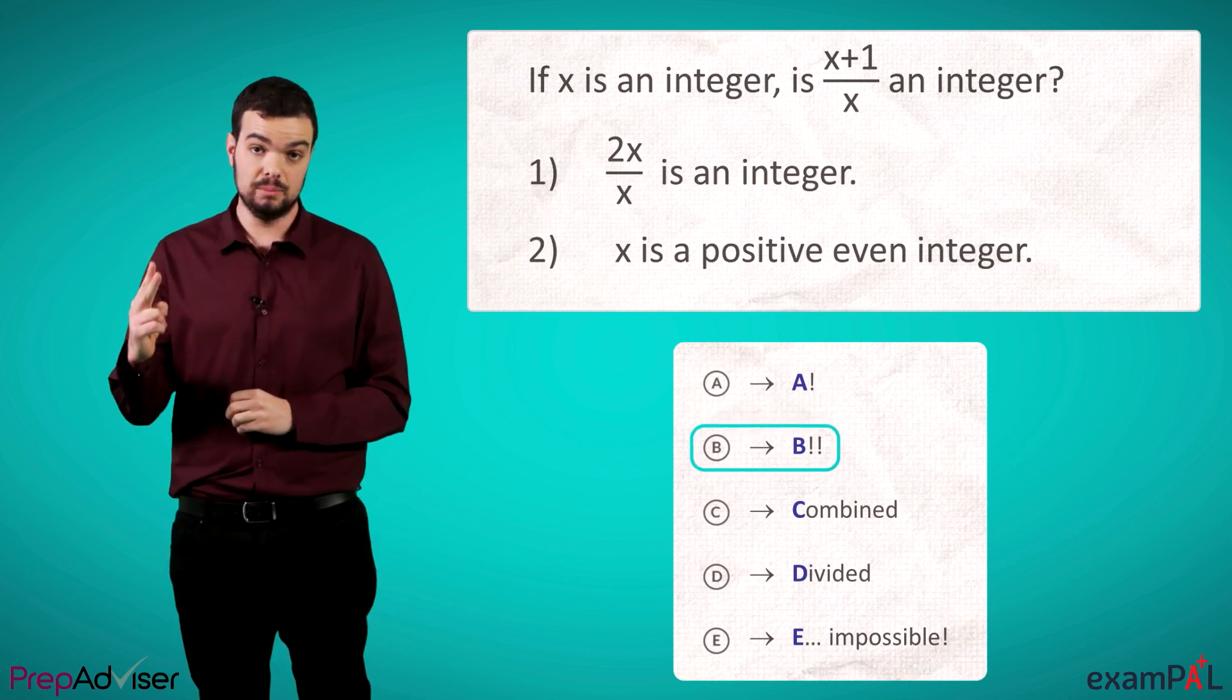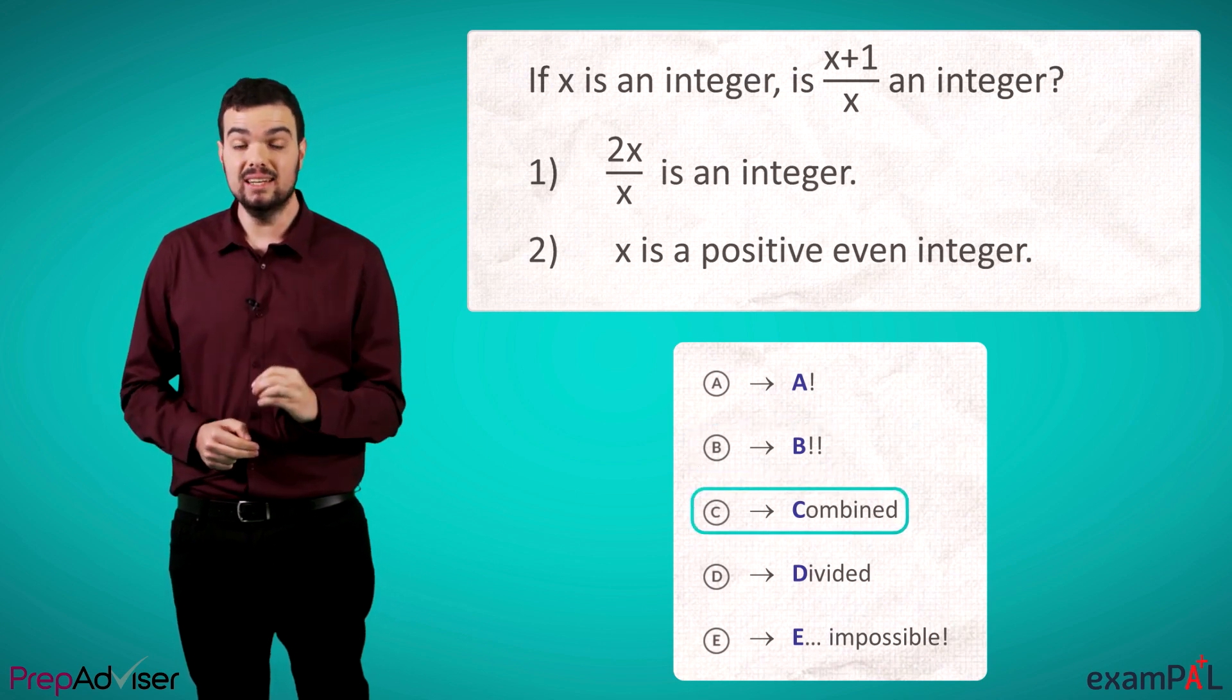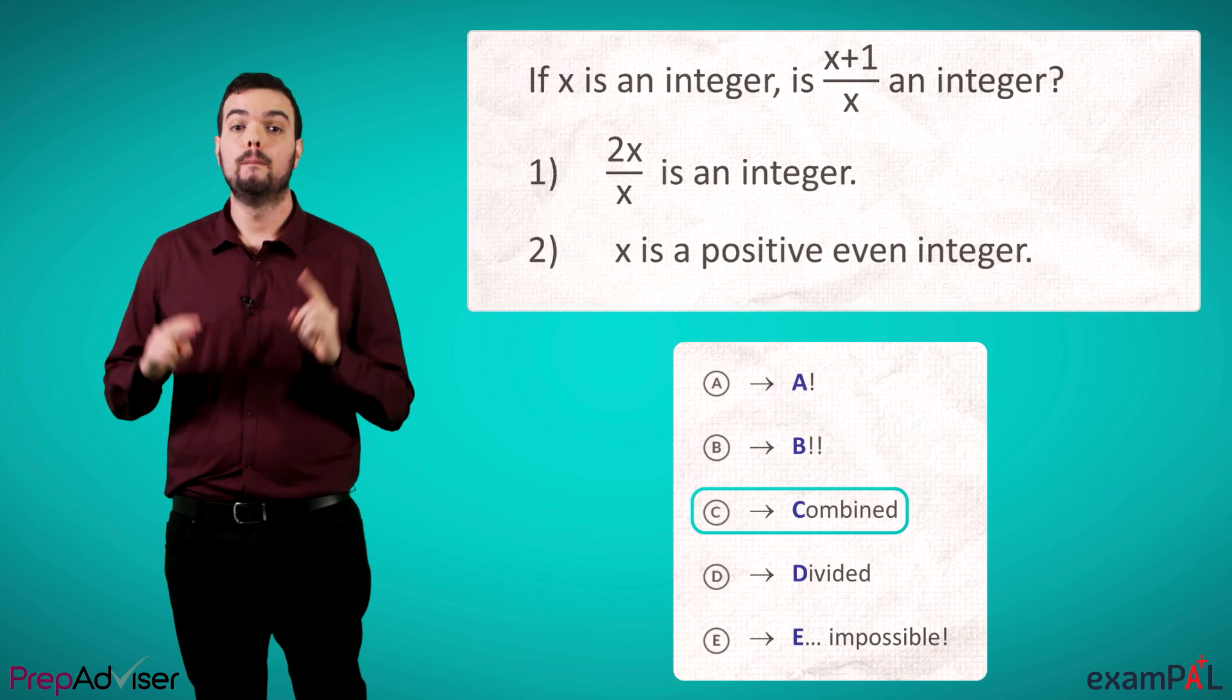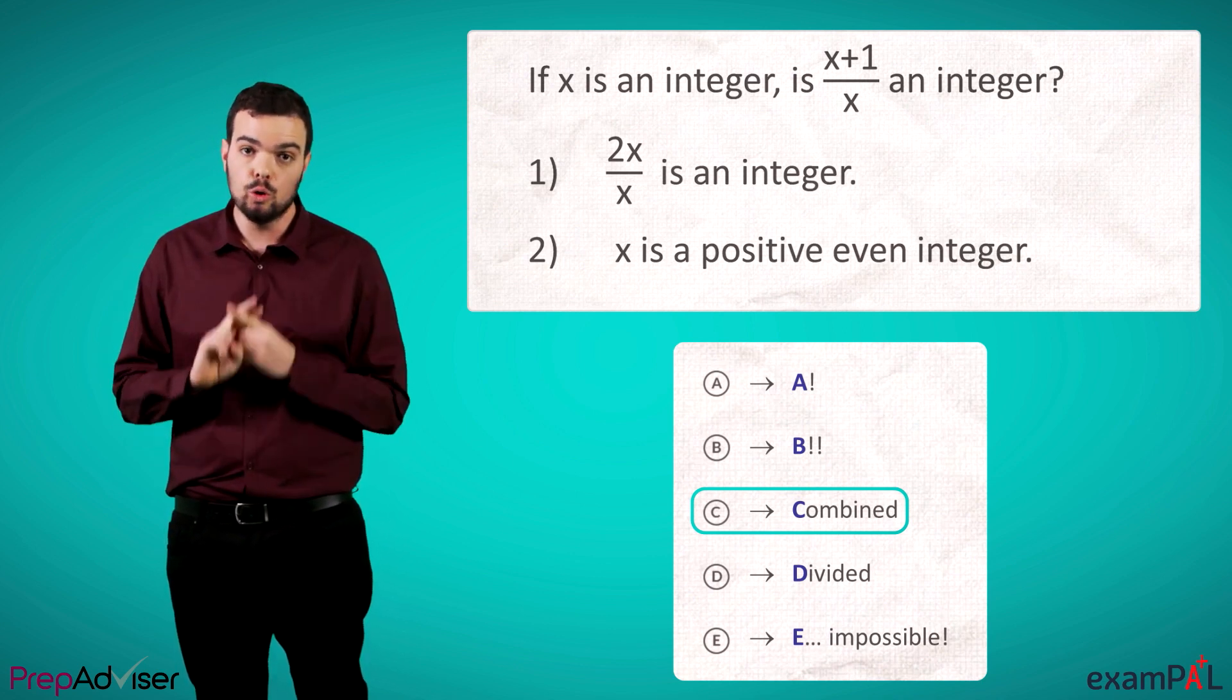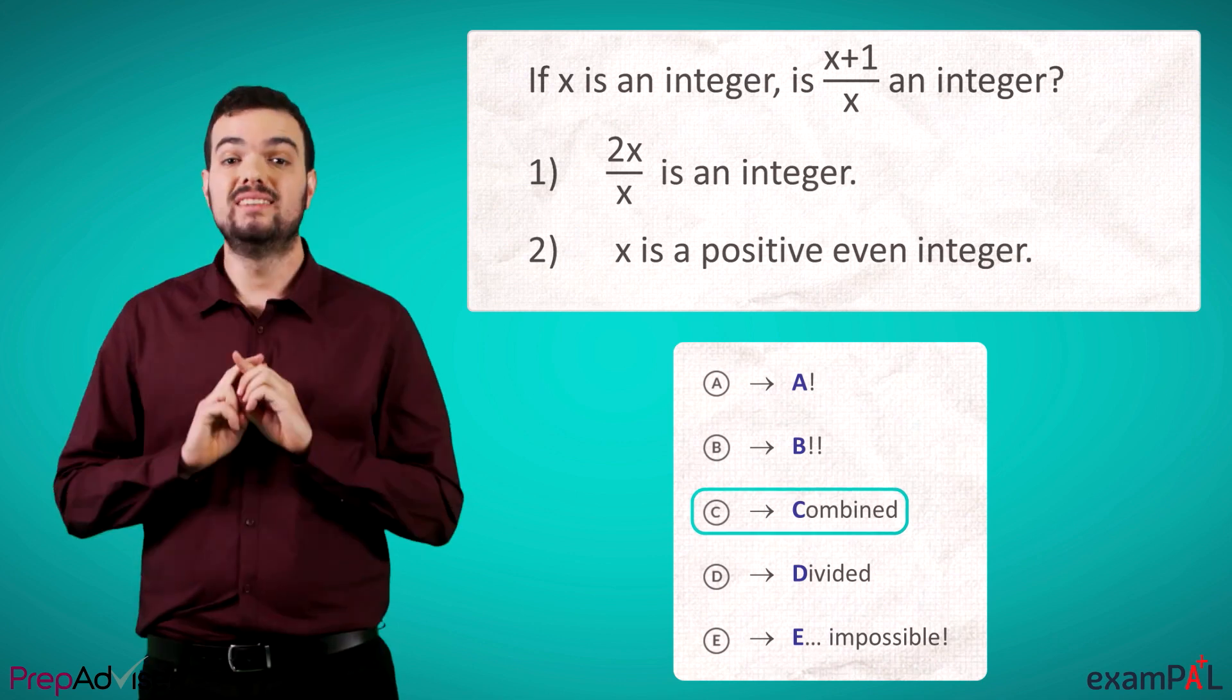B: The second statement, alone, is sufficient. C: Combined. Both statements must be combined in order for us to have enough information to answer the question.